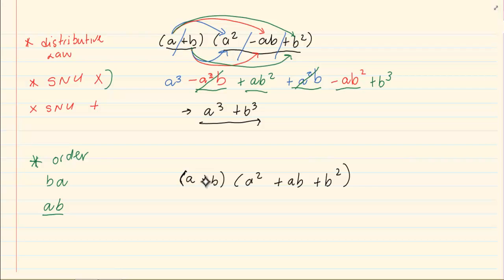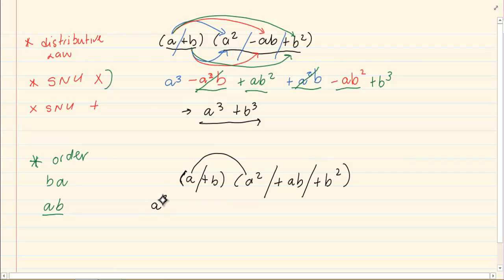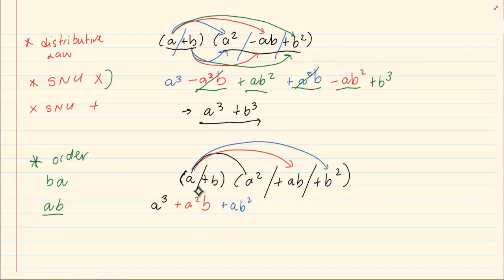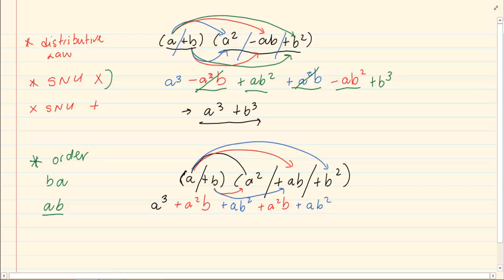Now, we are still going to do the distributive law. We are going to take each term from the first bracket and we are going to distribute it to every term in the second bracket, at all times remembering we are using signs, numbers and unknowns. a cubed plus a squared b plus ab squared. And then the bottom, but now we are taking the second term. a squared b plus ab squared, a squared b plus b cubed.